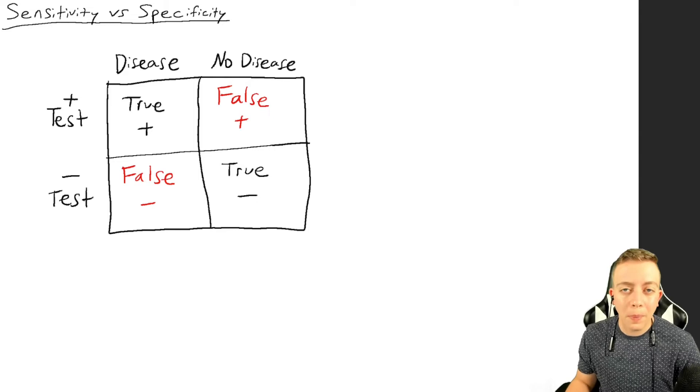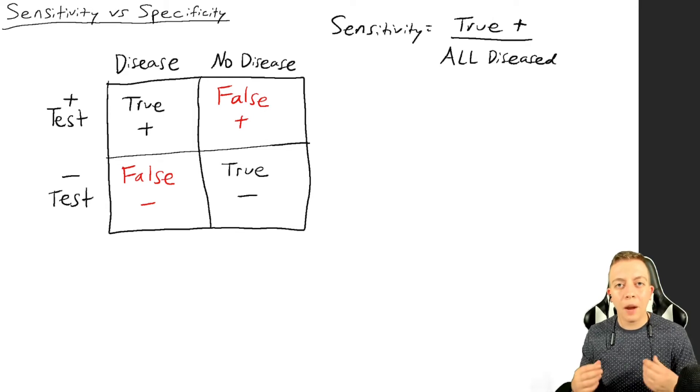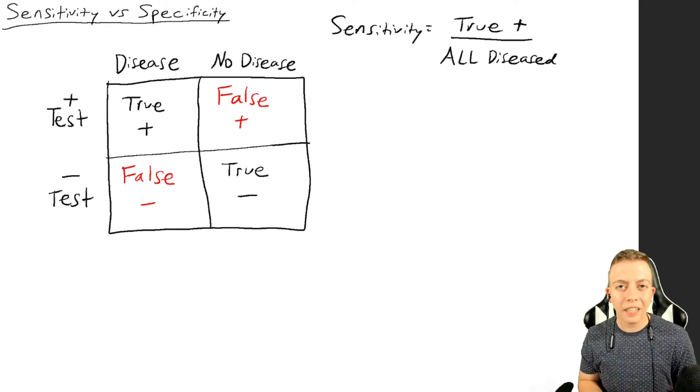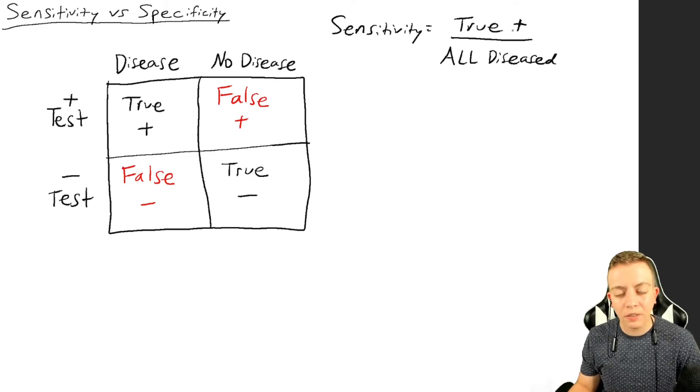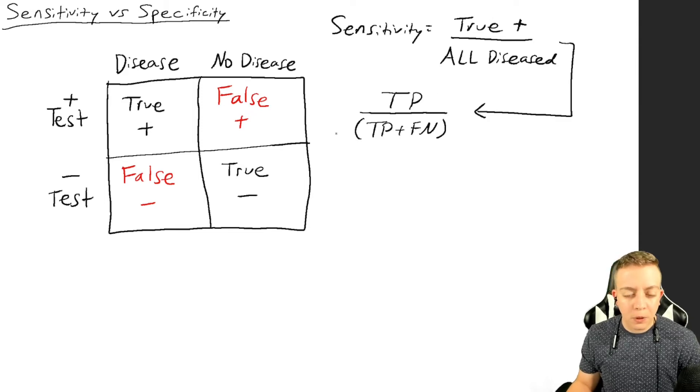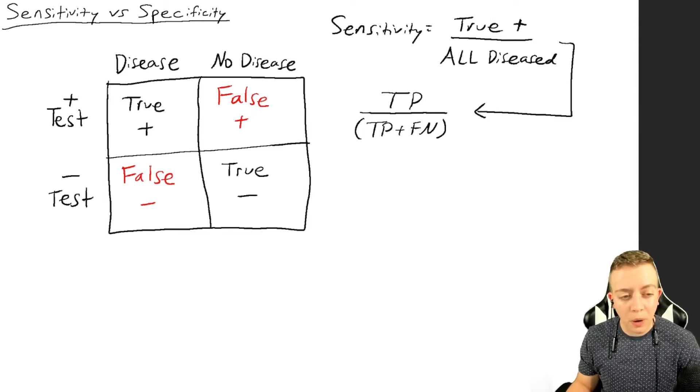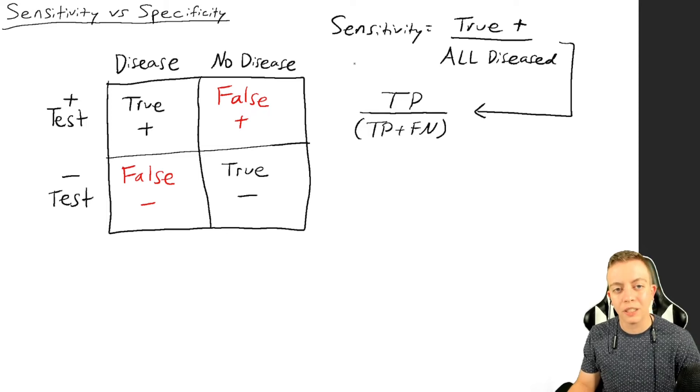Remember, sensitivity refers to if I am known to have the disease, what is the likelihood that my test would be positive. We determine this by taking the true positives and dividing that over all people who have the disease. That would include people who have true positives as well as people who have false negatives, because if your negative test result is false, it means you have the disease. So true positives divided by the sum of true positives plus false negatives will get you the sensitivity.